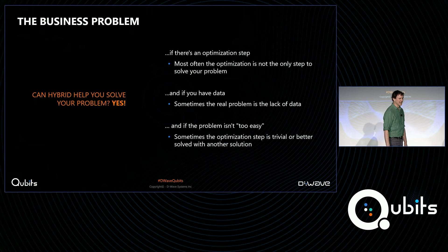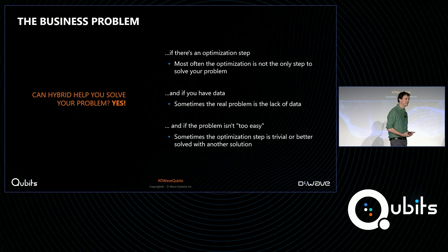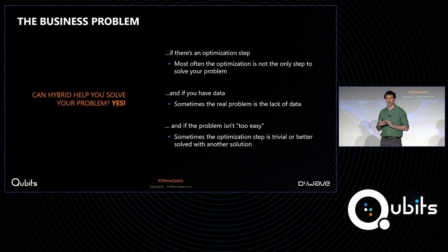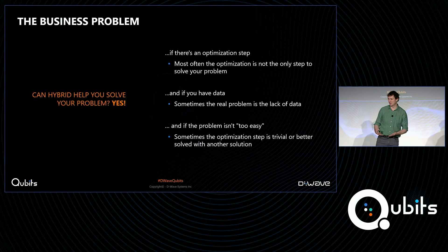The last place this can go wrong is that sometimes the problem is what we like to say is too easy. There is an optimization step, but it's trivial or might be better solved by another solver. The hybrid solver is very general — we combine classical and quantum resources together because it gives us the best of both worlds. But sometimes the optimization step really is just you have a list of numbers and you want the largest one. That's potentially important to your business, but perhaps not something that requires the power of quantum.